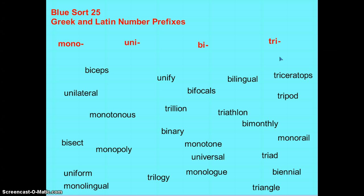If you know Spanish, you'll also notice that Spanish has these same prefixes: mono, uni, and tri. But you also need to note that mono means monkey in Spanish, so be careful with that.